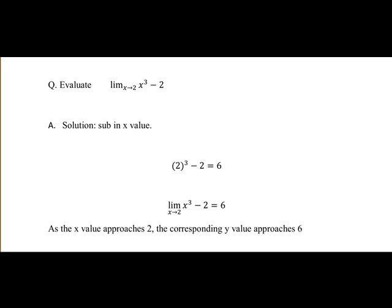A further simple example: the limit as x approaches 2 of x cubed minus 2. Just substitute x with 2 — we get 2 cubed minus 2, which is 8 minus 2, which is 6. So as x approaches 2, the corresponding y value approaches 6. We can see it here on the curve: as the x value approaches 2, the corresponding y value will be 6.